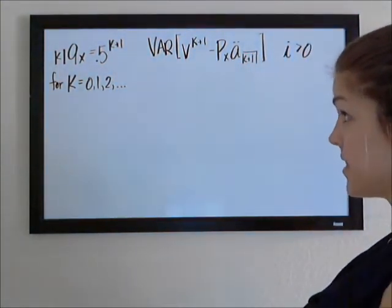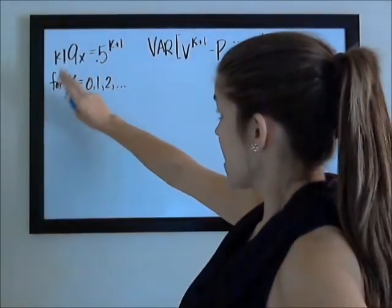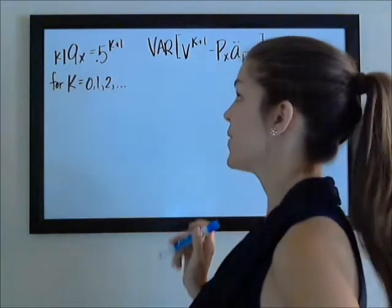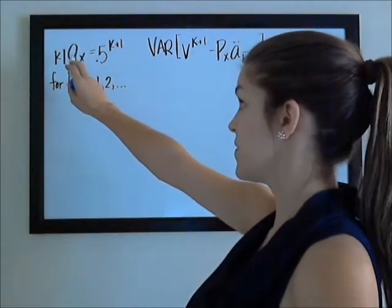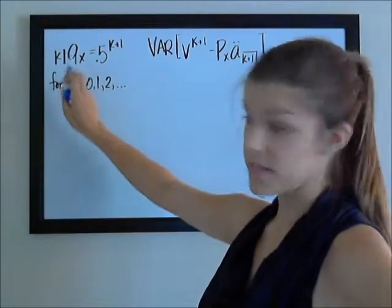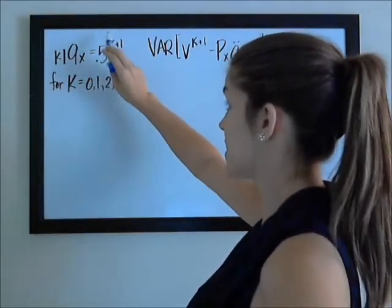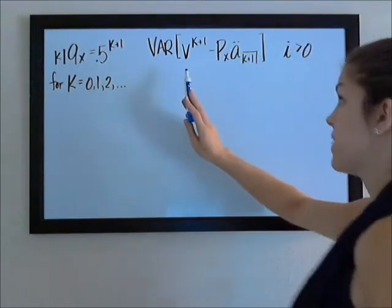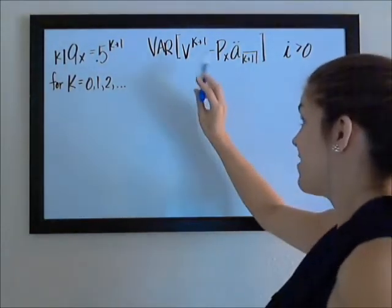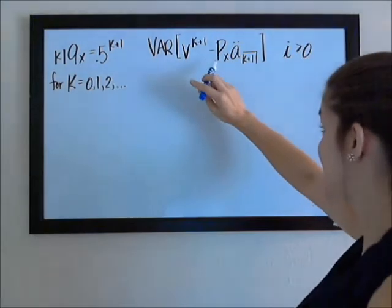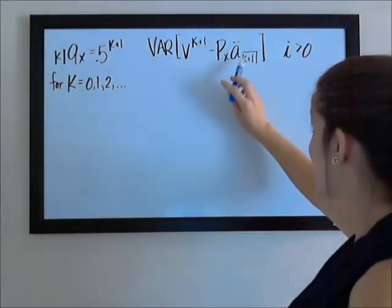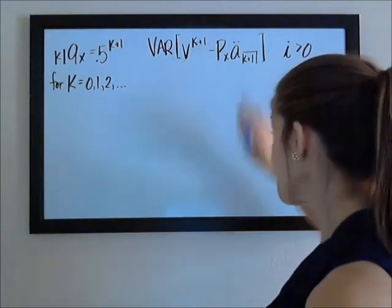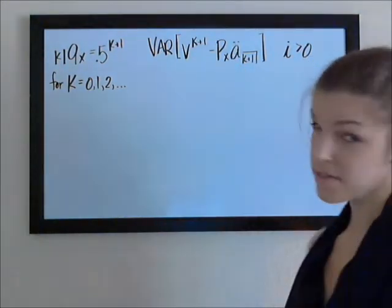They give us that k bar qx, or the probability that an x-year-old lives k years and then fails to live the next year, is 0.5 to the k plus 1. And they would like us to find the variance of v to the k plus 1 minus the premium times an annuity due of k plus 1.